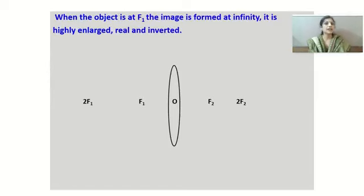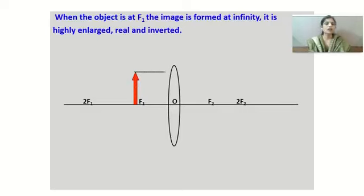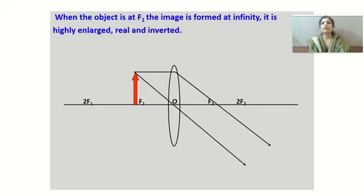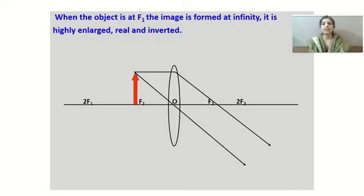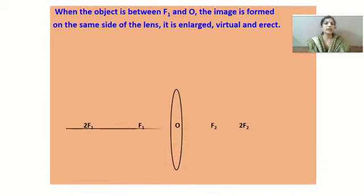When the object is at F₁: the first ray parallel to the principal axis after refraction passes through F₂; the second ray through the optical center goes undeviated. Both refracted rays are parallel to each other and do not meet at any point. Therefore, the image is formed at infinity and is highly enlarged, real, and inverted.